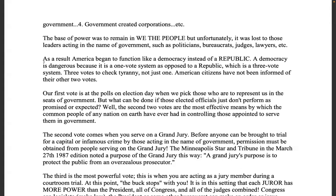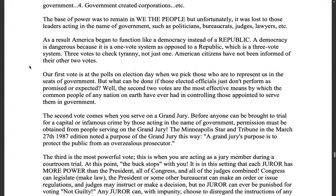As a result, America began to function like a democracy instead of a republic. A democracy is dangerous because it is a one-vote system, as opposed to a republic which is a three-vote system. A democracy is majority rule — mob rule. A republic is ruled by law, with limited government that can only function within the bonds given to it, not permitted to go beyond. In a democracy you can vote yourself more of anything so long as you have majority rule.